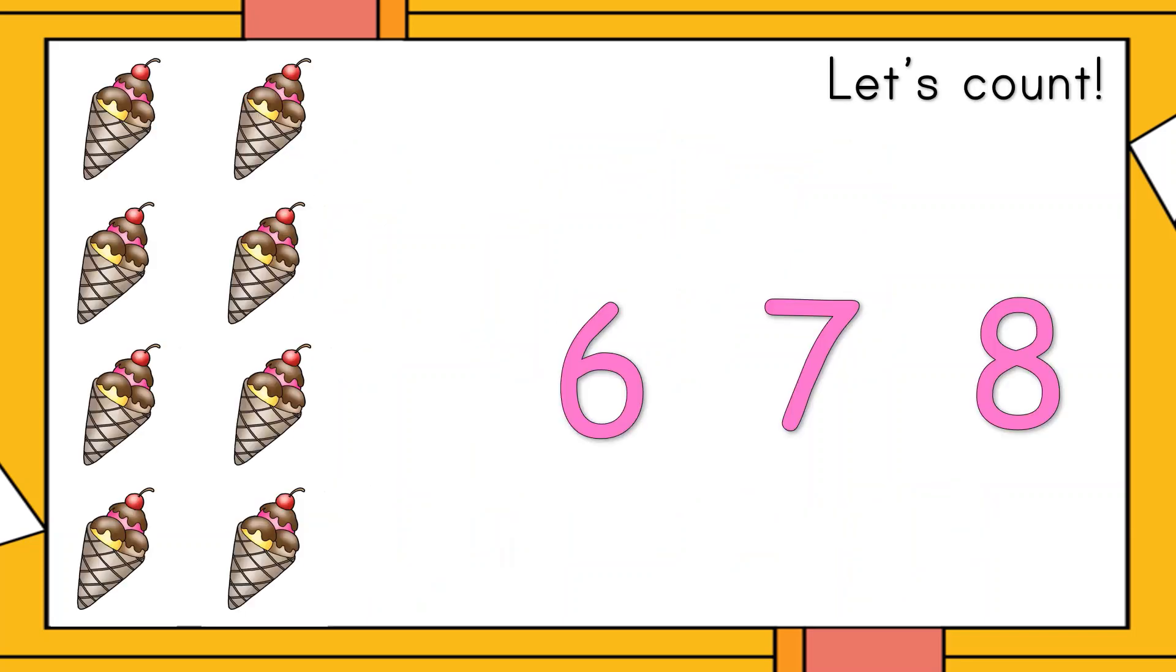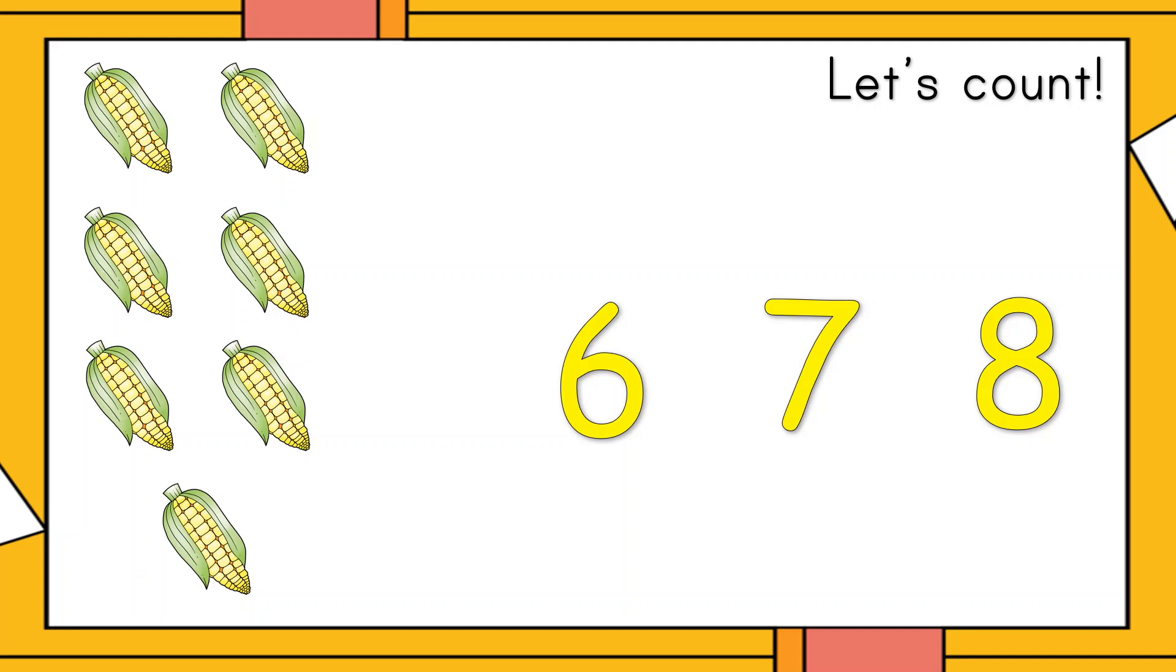Eight cones. How many cones of ice cream are there? Well done, eight cones of ice cream. How many corns are there? Well done, seven corns.